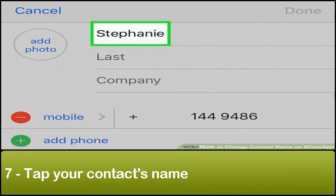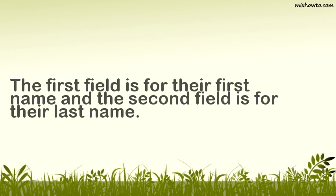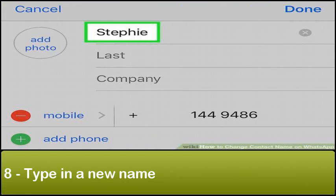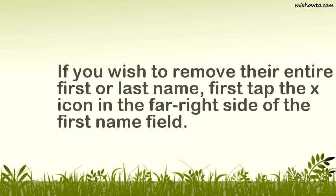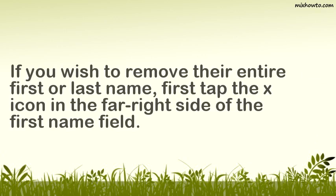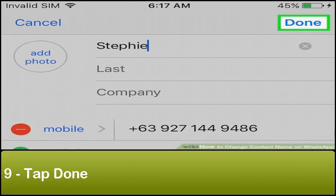Step 7: Tap your contact's name. The first field is for their first name and the second field is for their last name. Step 8: Type in a new name. If you wish to remove their entire first or last name, first tap the X icon in the far right side of the first name field. Step 9: Tap Done.